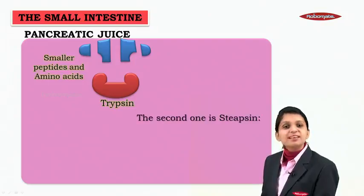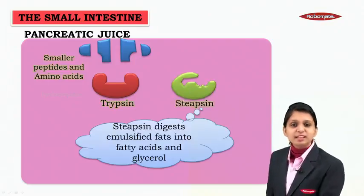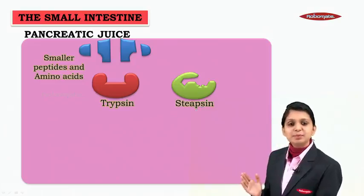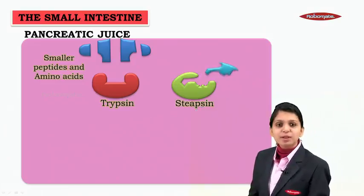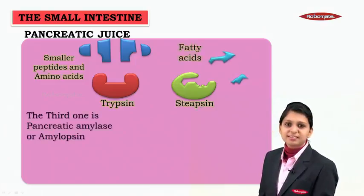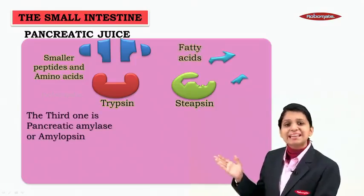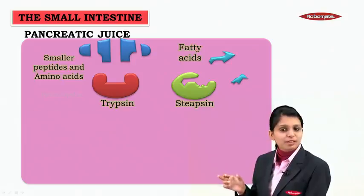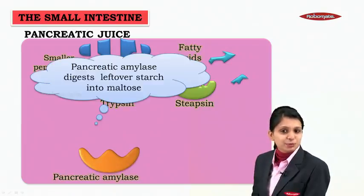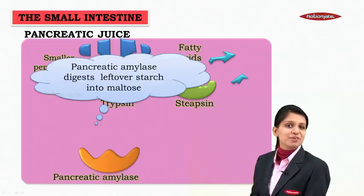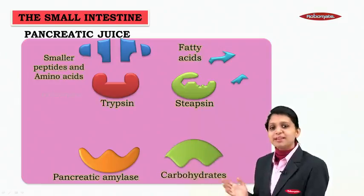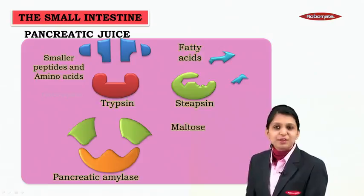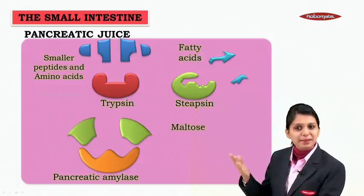The second enzyme is steepsin, which digests emulsified fats into fatty acids and glycerol. The third enzyme is pancreatic amylase, also called amylopsin, which digests leftover starch into maltose. These are the three enzymes present inside the pancreatic juice.